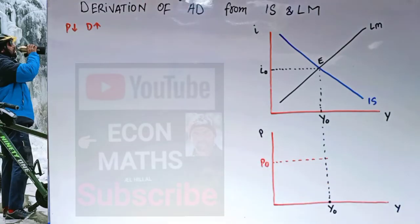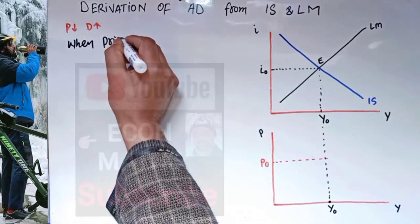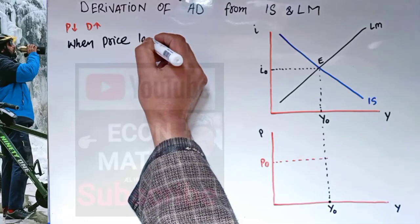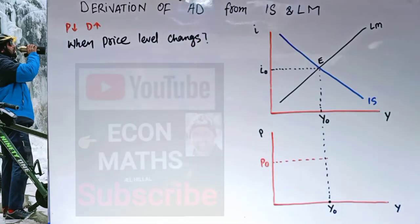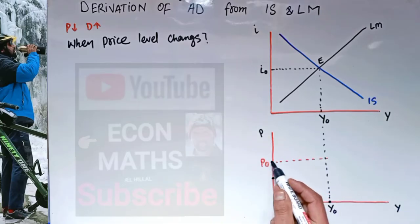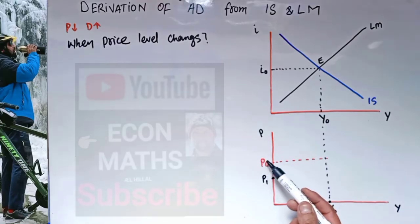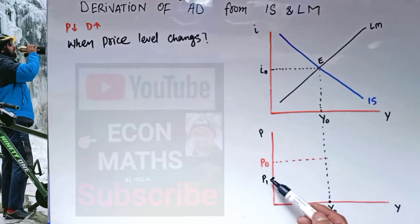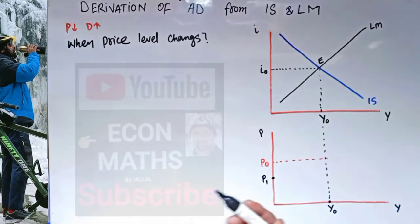Now we introduce a change in price level — what happens when the price level changes? We need to find out the effect of a change in price level. Suppose price decreases from P₀ to P₁. We will examine the effect on the IS and LM curves.